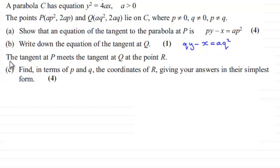Now we're told that the tangent at P meets the tangent at Q at point R. We've got to find, in terms of p and q, the coordinates of R, giving your answers in their simplest form for four marks.